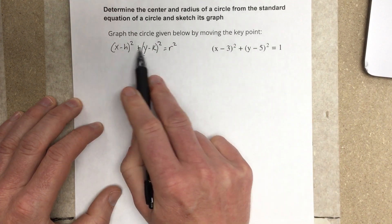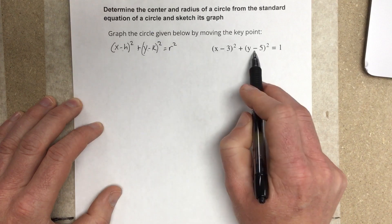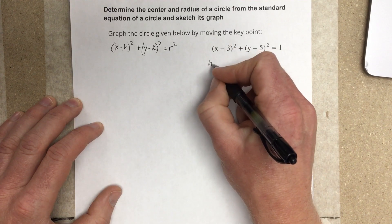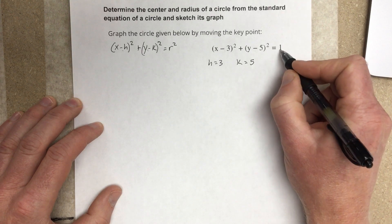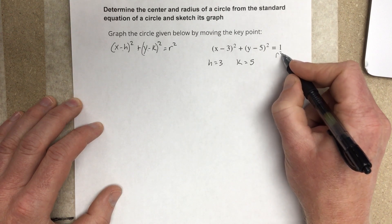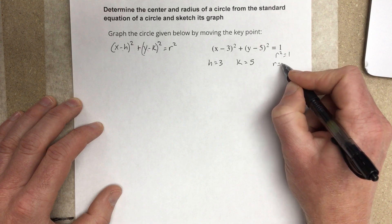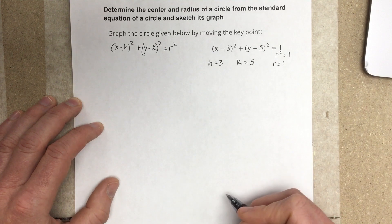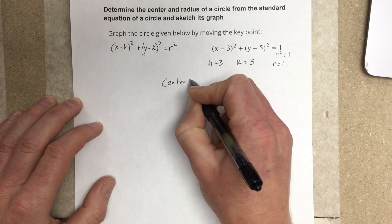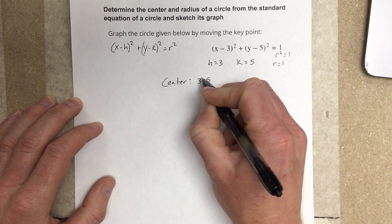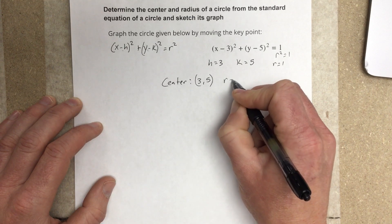Because there are negative signs in this formula, we can say that our h value here is 3, our k value is 5, and this is r squared. If r squared is 1, then r is actually equal to 1 as well. My center for the circle will be (3, 5) with a radius of 1.